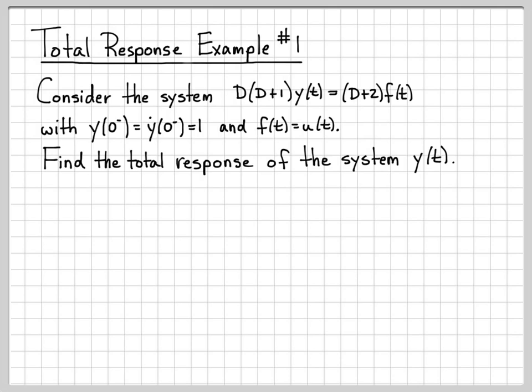This involves a lot of work because there are a lot of components and pieces to solving for the full solution y(t). So to do that, we're going to break it down into some parts. One of the parts that we need is the zero input response. As a first step, let's just solve for the zero input response of the system — that's pretty easy to do.